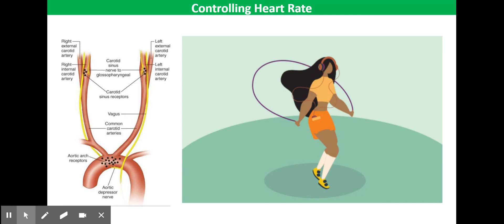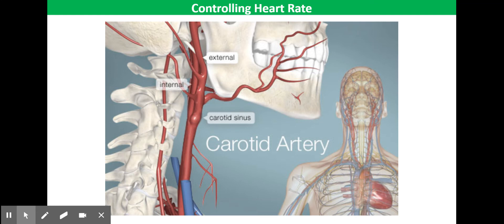Finally, we have stretch receptors in the walls of the carotid sinus, which monitor blood pressure. Now the carotid sinus is just a small swelling in the carotid artery. And an increase in blood pressure, perhaps during vigorous exercise, can be detected by these stretch receptors. Now if the pressure rises too high, the stretch receptors will send action potentials to the cardiovascular centre, which will then lead to a reduction in heart rate.